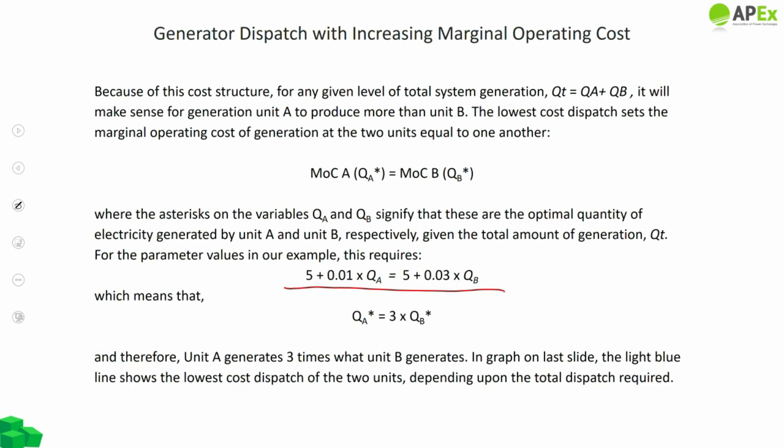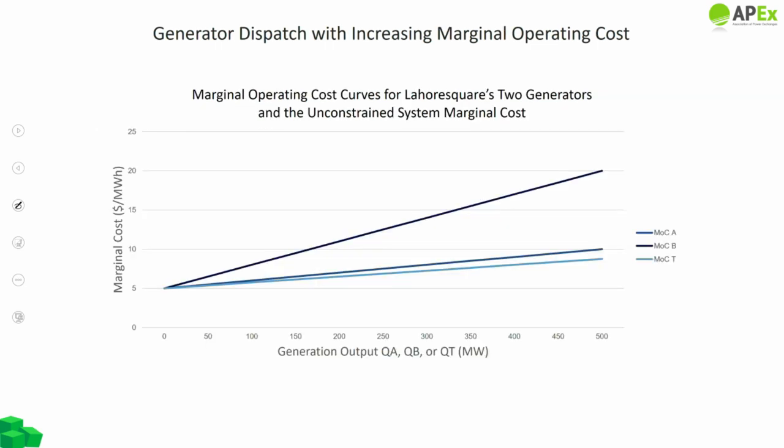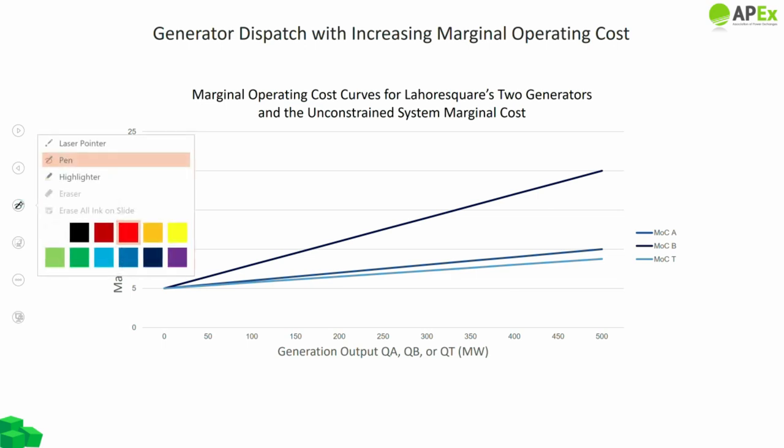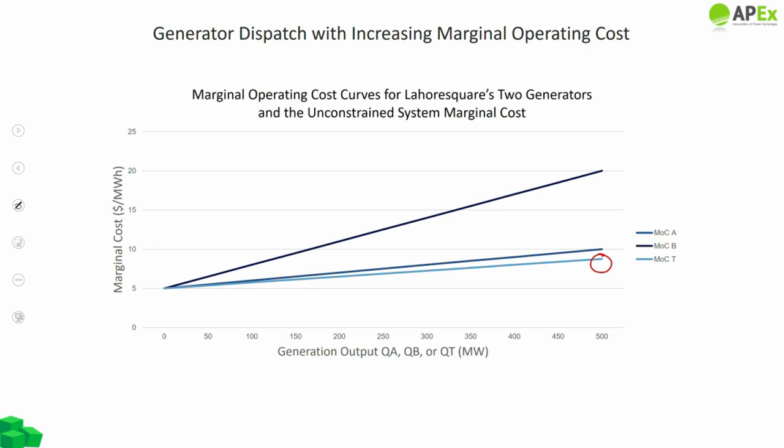In other words, generating unit A produces three-fourths of total generation while unit B produces one-fourth. The total system marginal operating cost increases more slowly than either individual unit's cost. Given the optimal dispatch across the two units, we can calculate the system marginal cost for any level of total generation. The system marginal cost curve — which is also the supply stack accounting for increasing marginal costs — climbs more slowly than the marginal cost of providing the same output from any single generator.